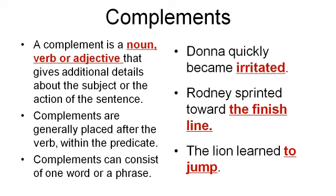The lion learned to jump. Lion is the subject. Learned is the verb — it is the main action of this sentence. So what is to jump? To jump is the complement that is acting as a verb. To jump is an infinitive phrase; it is not the main verb of the sentence. It is functioning as a verbal phrase — meaning it is not the main verb, but it contains a verb, jump, which is functioning as a complement. You might want to pause the video right here to let all of this sink in.